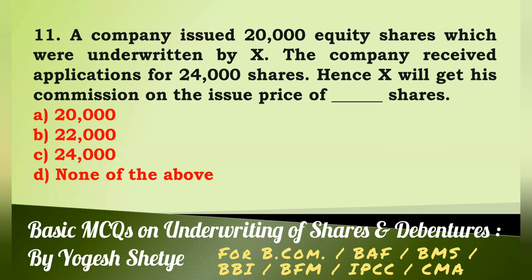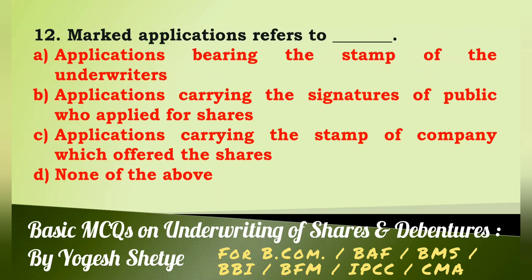Hence X will get his commission on the issue price of — (a) 20,000 shares, (b) 22,000 shares, (c) 24,000 shares, (d) none of the above. Answer: X will get his commission on the issue price of 20,000 shares. Answer A.